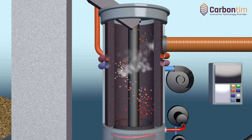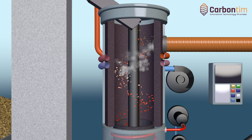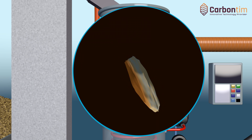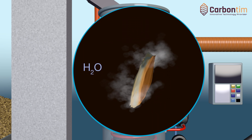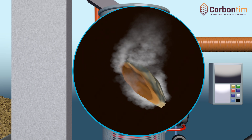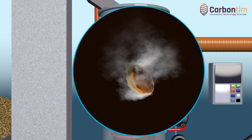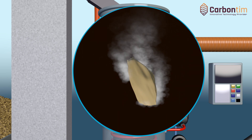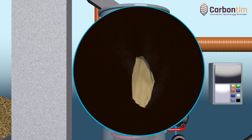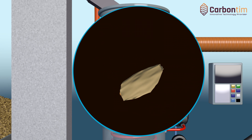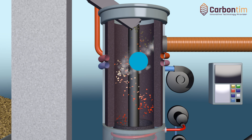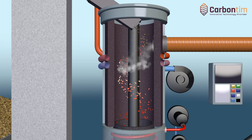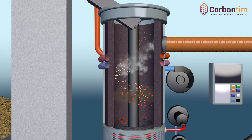The moisture evaporation process. All the moisture accumulated in the raw biomass has to evaporate in order to initiate the carbonisation process. Depending on the type of biomass and the amount of moisture accumulated in the process material, it can take from several to more than a dozen seconds, and its efficiency is due to the high temperature in the upper part of the reactor.